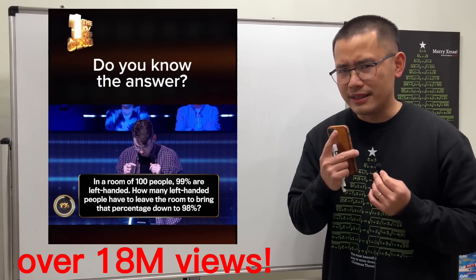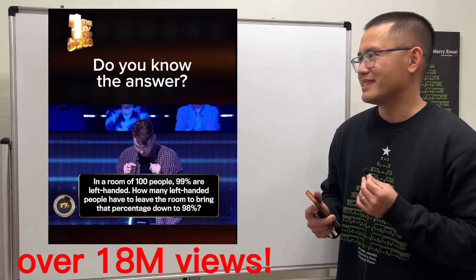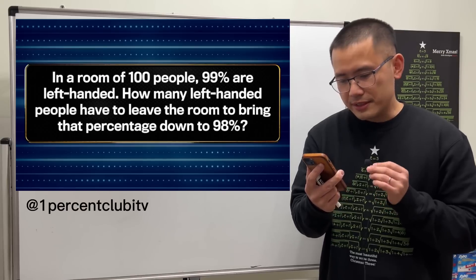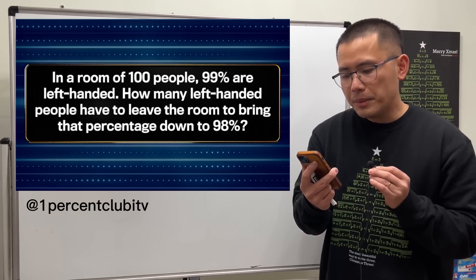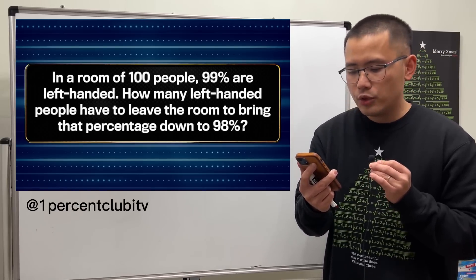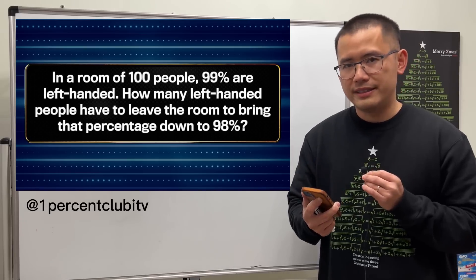Okay, I just saw this question on Instagram and a lot of people are getting this wrong. Well, let's check it out. The question is: in a room of 100 people, 99% are left-handed. How many left-handed people have to leave the room to bring that percentage down to 98%?